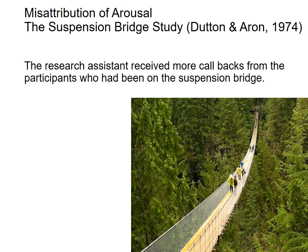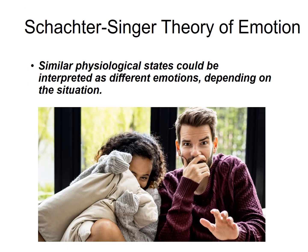It seems like a dated experiment — something we wouldn't do today — and I agree. But the theory makes the right prediction: our physiological states can be interpreted as different emotions depending on the situation. So if you're wondering whether taking a first date to a roller coaster park or a scary movie would work in your favor because of this theory, you are correct. The physiological arousal from the scary movie could be interpreted by your date as higher levels of romantic interest.